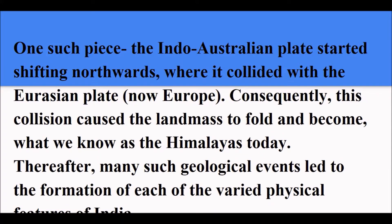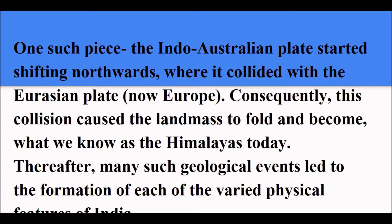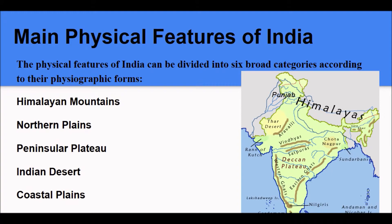One such piece, the Indo-Australian plate, started shifting northwards, where it collided with the Eurasian region and moved towards present-day Europe. Consequently, this collision caused the land mass to fold and become what we know as the Himalayas today. Many such geological events led to the formation of each of the varied physical features. The Himalayas are the youngest folded mountains in the world. This is the first physical feature of India.